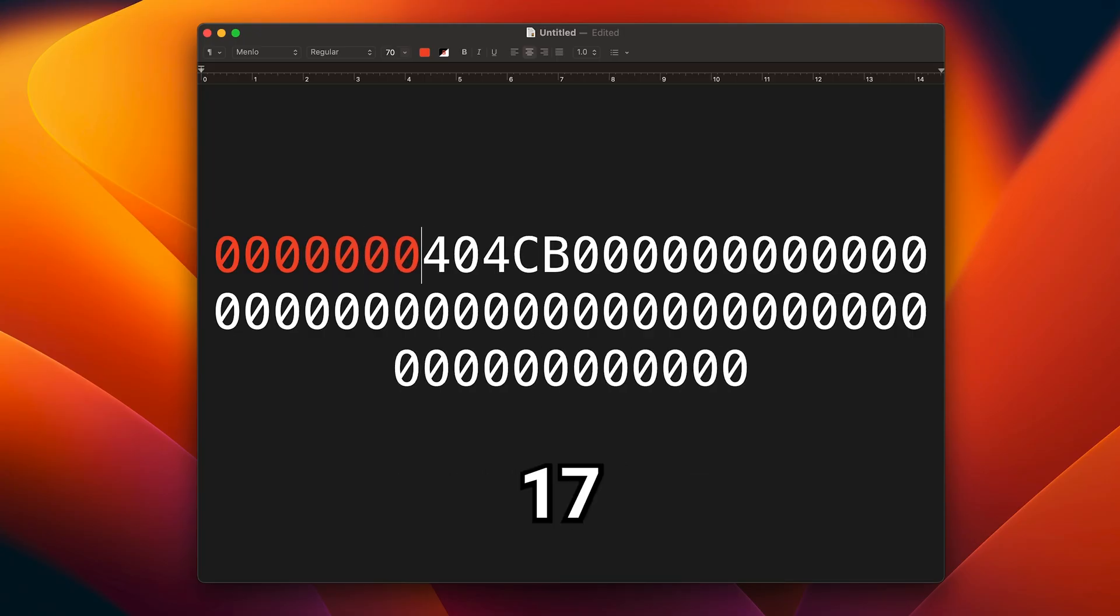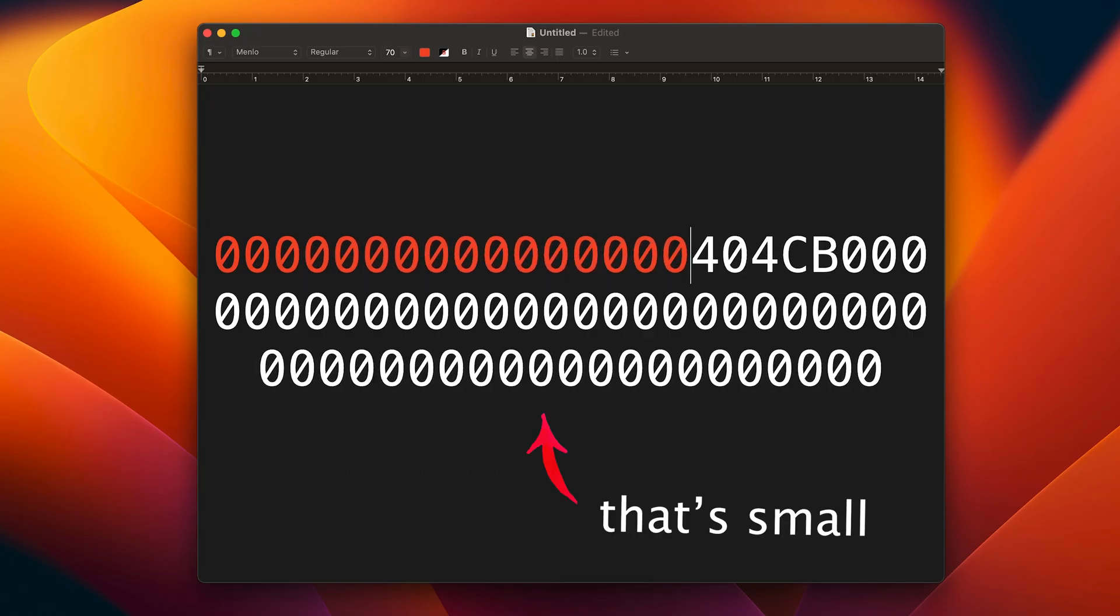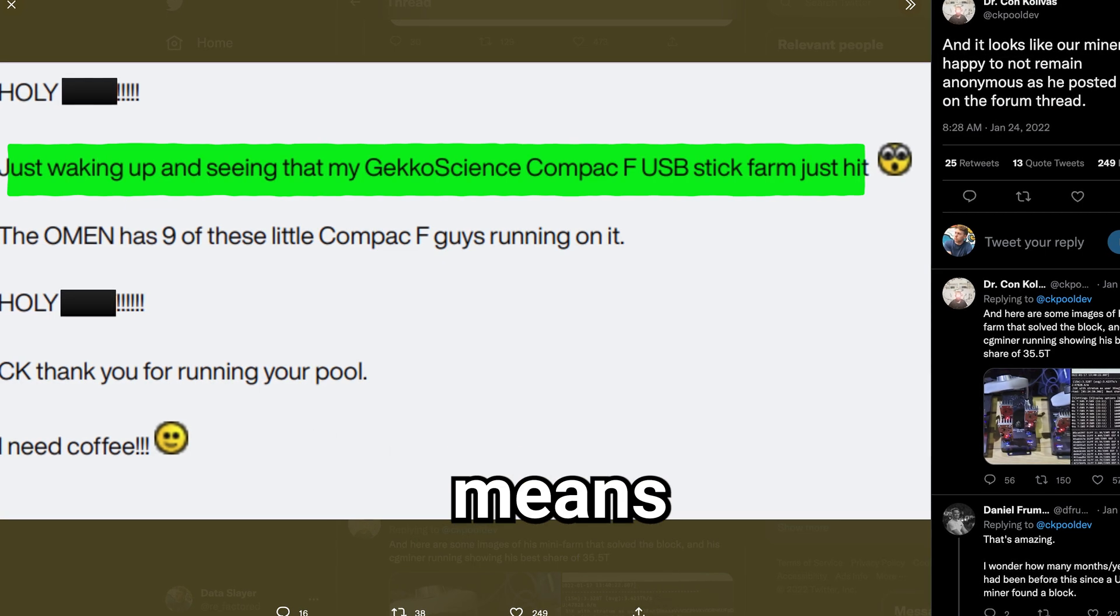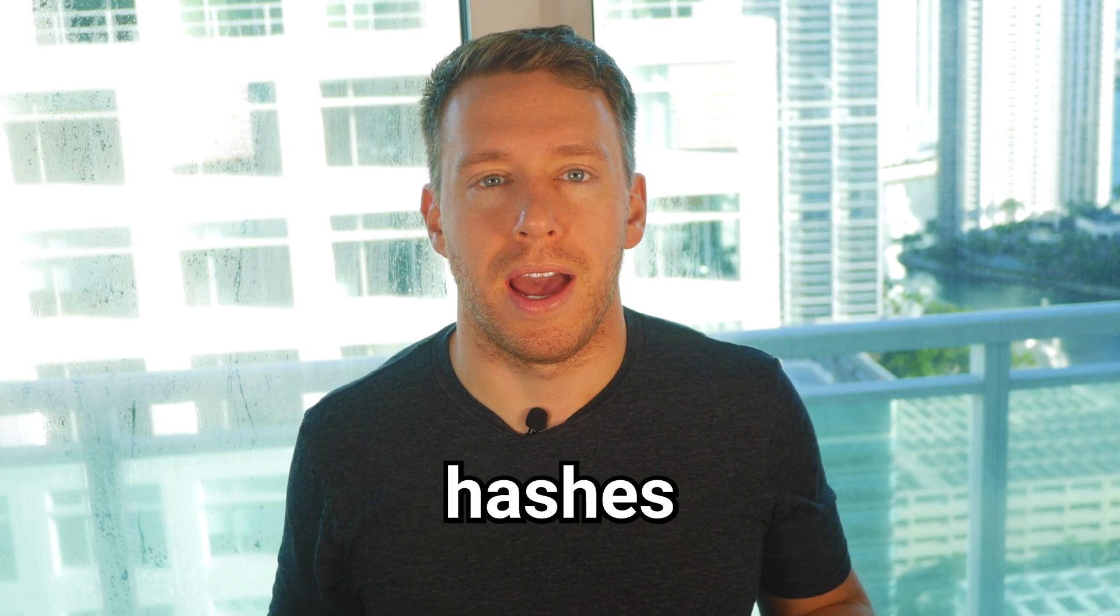The current difficulty level is a number with 17 leading zeros. And if you discover the number with these interesting properties, you get the block reward currently worth over $100,000. Which means I need to start generating hashes.